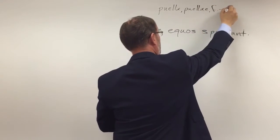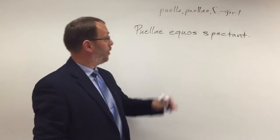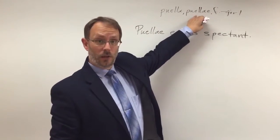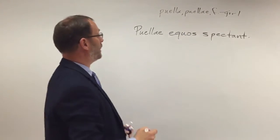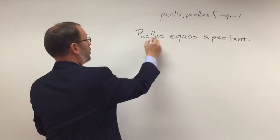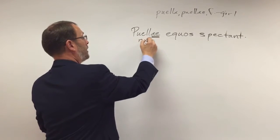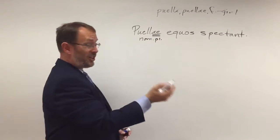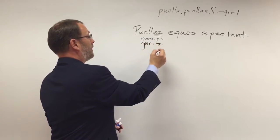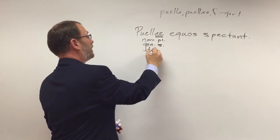Puellae, feminine, the word for girl. Well, that A-E tells me that's first declension. So if I look back at my first declension endings, I see that Puellae could be nominative plural, could also be genitive singular, and it could also be dative singular.